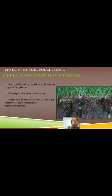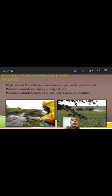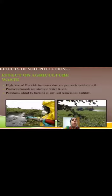Effects on photosynthesis. Soil polluted by acid rain has an impact on plants and disturbs soil chemistry. It reduces the plant's ability to take up nutrients and undergo photosynthesis. High doses of pesticide increase zinc and copper. Such metals in soil produce hazardous pollutants to water and soil. Pollutants added by humans or any fuel reduce soil fertility.